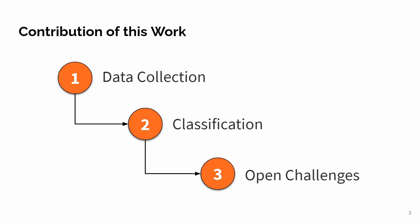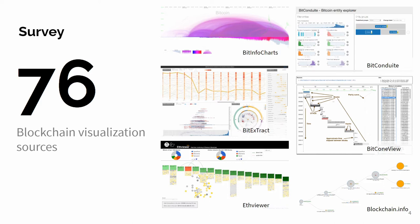In this work, we present a systematic review of the current state-of-the-art of blockchain visualization tools. First, we collect blockchain visualization sources, and then propose a classification scheme to group those visualizations. In the end, we look at research opportunities and open challenges in blockchain visualization. From the data collected from both research articles and publicly available online tools, we found a total of 76 blockchain visualization sources, which we separate into three categories.